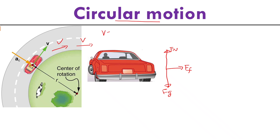The magnitude of the velocity does not change, but velocity is a vector — it has both magnitude and direction. We can clearly see that the direction of the velocity is changing, so that means the velocity is changing.